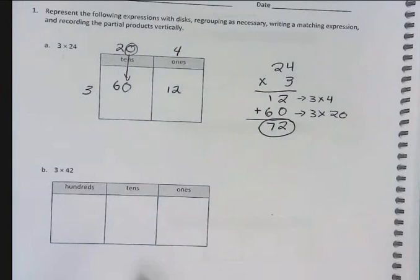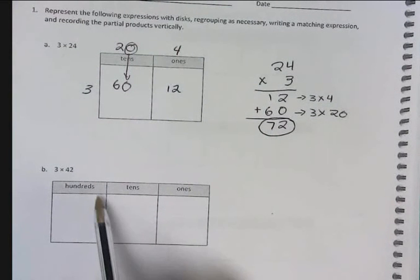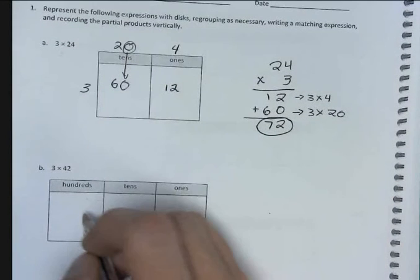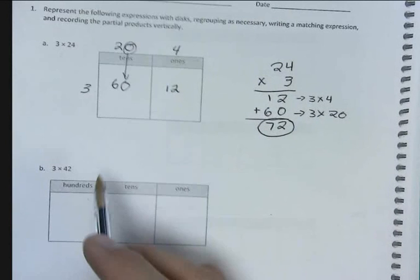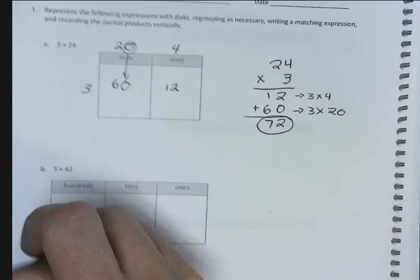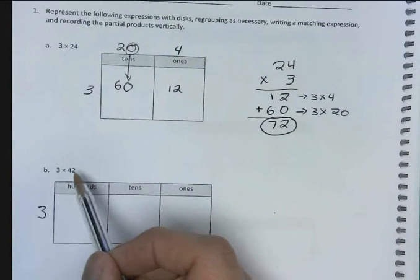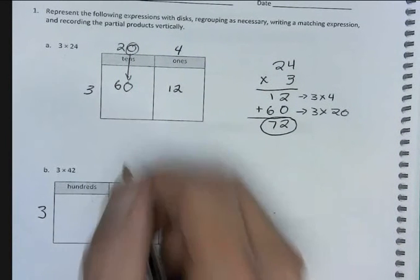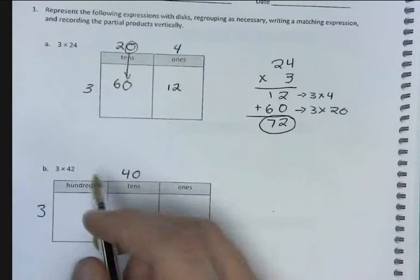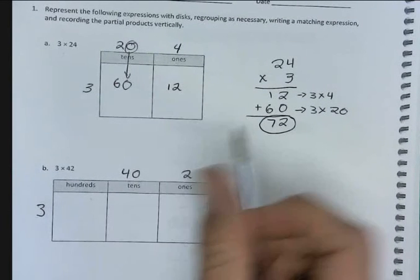So let's look at our second example here. This time we have a hundreds box. We may not need it. Let's look at our problem, 3 times 42. So again, 3 goes along the side. We break 42 apart into 4 tens and 2 ones. So 4 tens is 40, 2 ones is 2. We're not going to use our hundreds place.